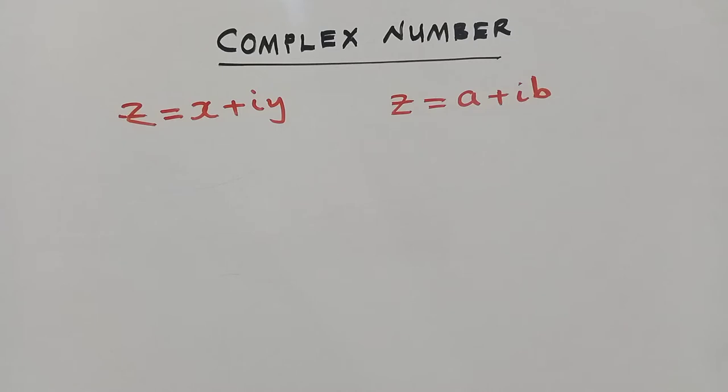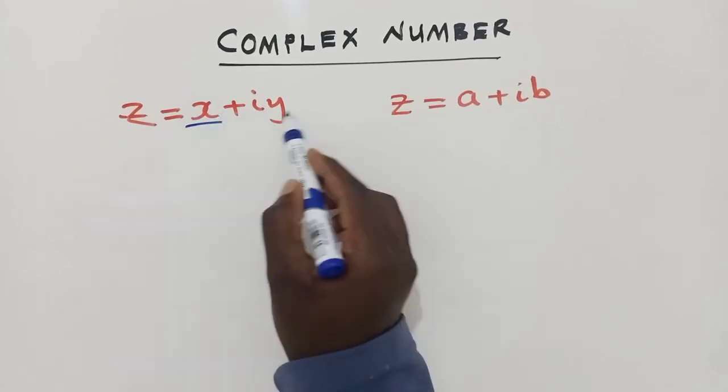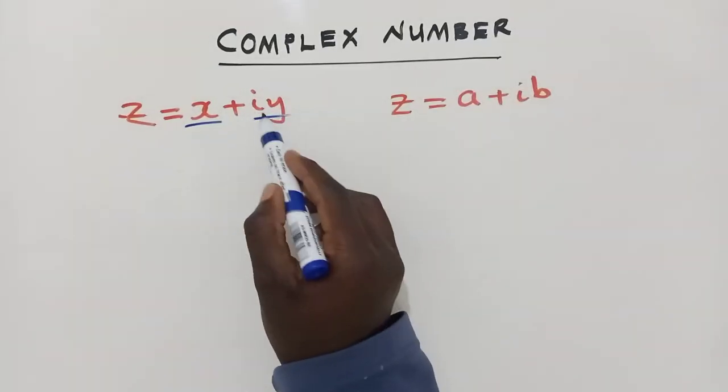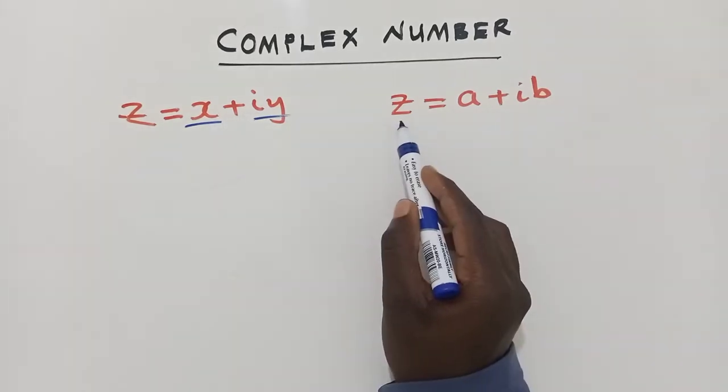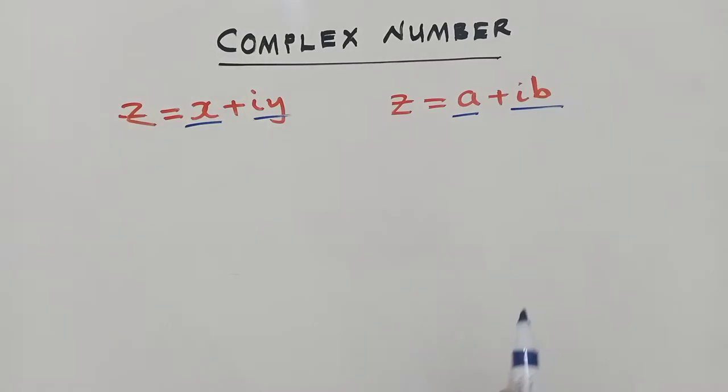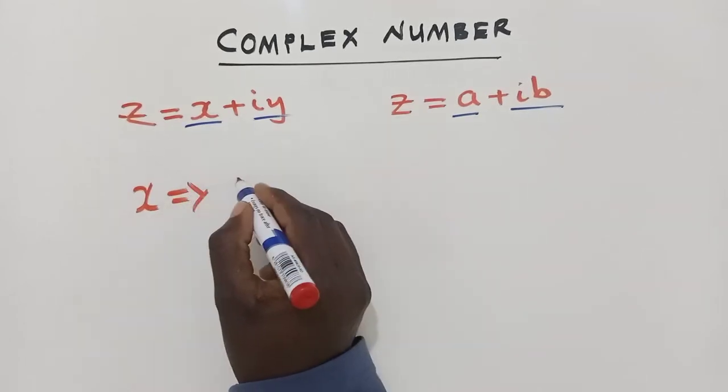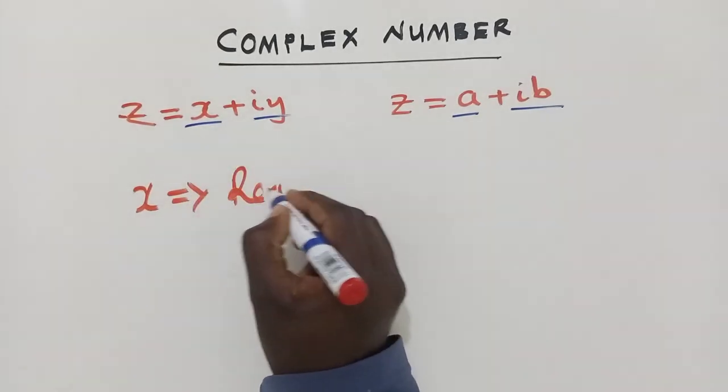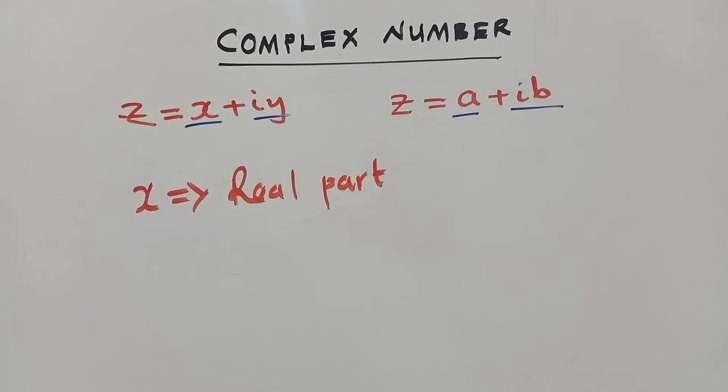So if you are able to see nicely, there is a certain pattern which is happening here. We have X, this one, and the other letter here is moving with i. Here we have Z. Z is common. Here we have a letter without i and here there is a letter with i. So we normally call the X here, we call it the real part of the complex number.